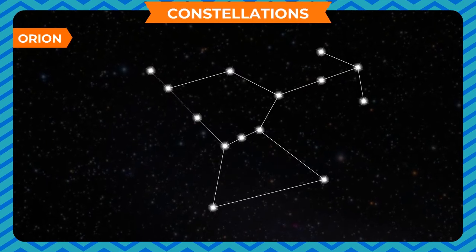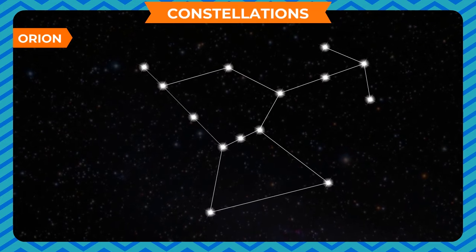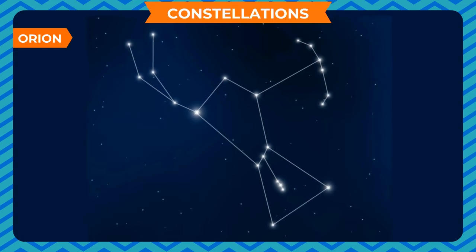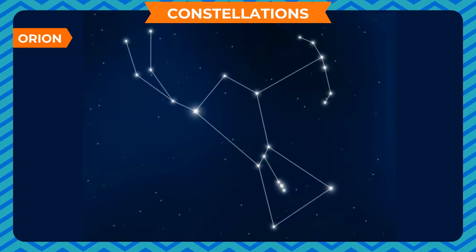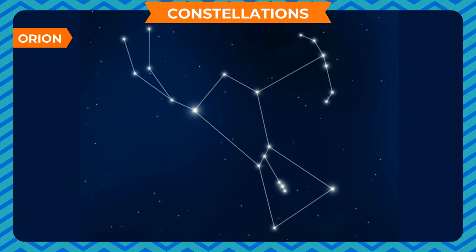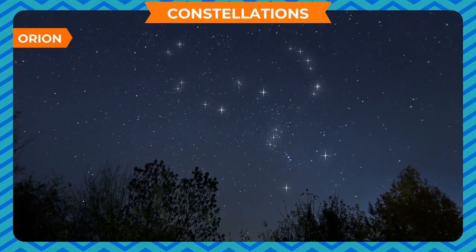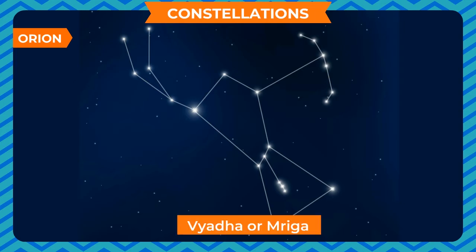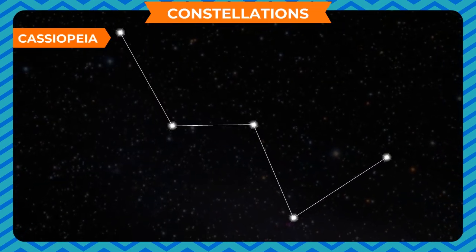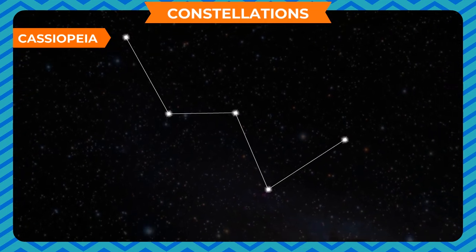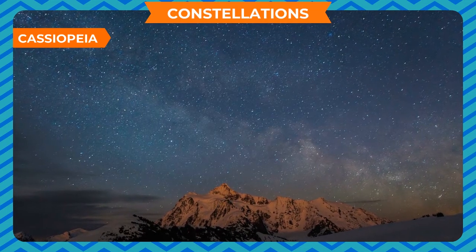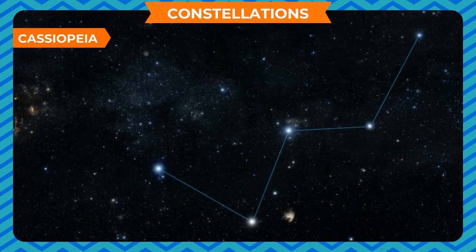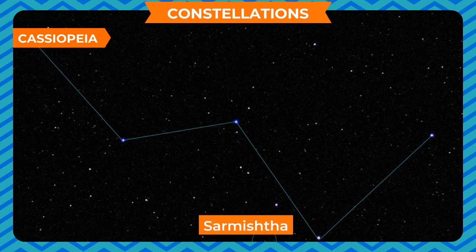Orion: This constellation has seven bright stars and a few faint ones which arrange themselves to resemble a hunter. The three middle stars represent the belt and the four bright stars represent the arms and the legs. It is visible in the northern sky in the late evening during winter. Its name in Indian astronomy is Vyadha or Mriga. Cassiopeia: It is another prominent constellation in the northern sky, visible during winter in the early part of the night. It looks like a distorted letter W or M. Its name in Indian astrology is Sharmistha. It is a group of five stars.